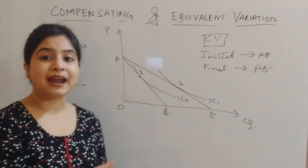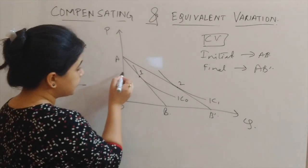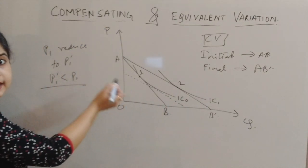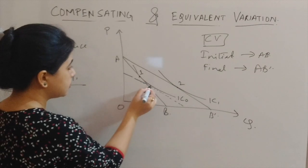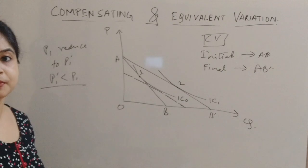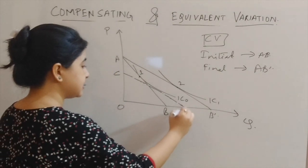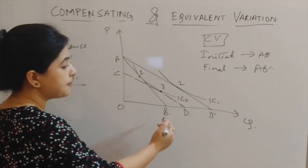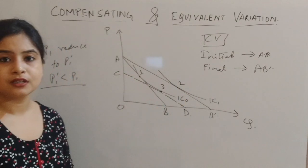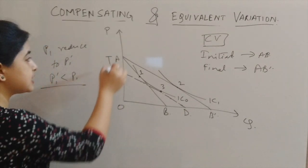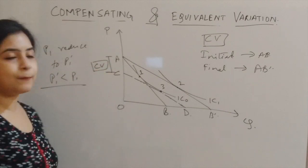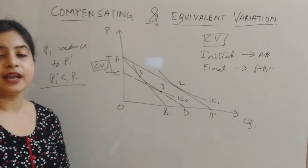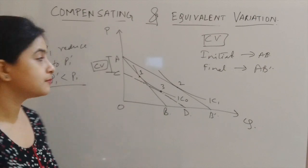The new parallel line must also be parallel to the final budget line AB dash and pass through IC naught. I am drawing it as a dotted line — this dotted line is marked CD. Point 3 is where CD, which is parallel to AB dash, is tangent to IC naught. The gap between the two vertical intercepts A and C is my compensating variation. That is how we can diagrammatically represent compensating variation.